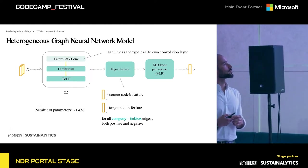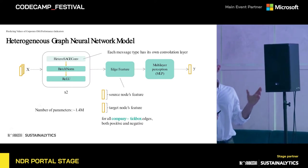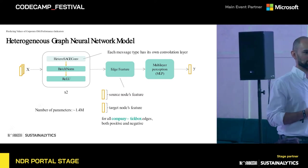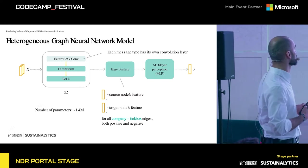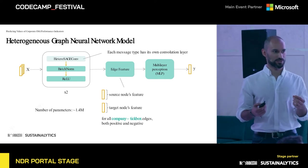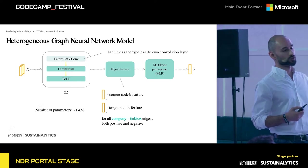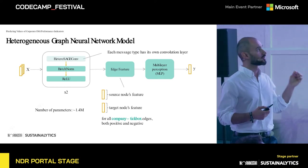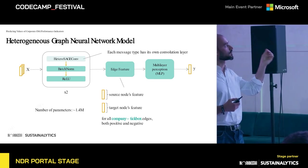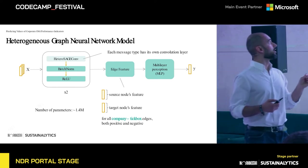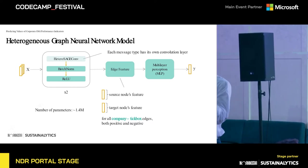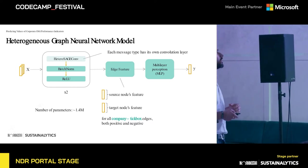Looking at the model's architecture, the first layer is the heterogeneous variant of the graph SAGE model presented in the previous project. It is designed for heterogeneous graphs — graphs that have different kinds of nodes and edges. This model distinguishes between message types, and the key difference is that it has its own convolution layer for each message type. These layers are then aggregated and combined.